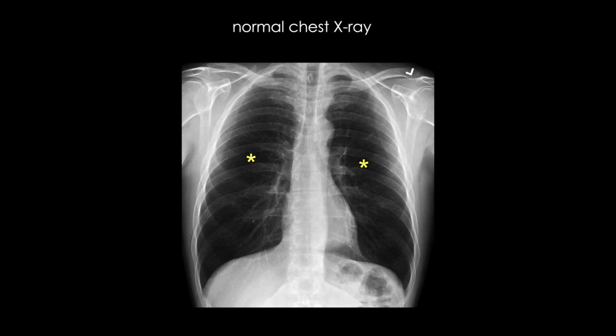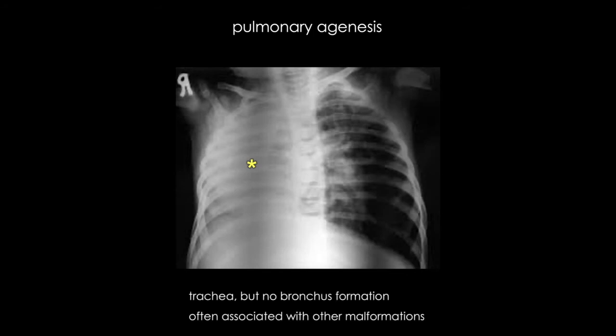In pulmonary agenesis, the bronchial tree, pulmonary parenchyma, and pulmonary vasculature don't develop. On this chest X-ray, the right lung appears white instead of black compared to the left. We have formation of the gut tube and the respiratory diverticulum — that primordium of the lung — but the bronchial bud most likely failed to develop on the right side, or the primordium hasn't formed at all. This is a very early developmental arrest. Lung agenesis can be an isolated finding, but in many cases it's associated with other congenital malformations, including those in the urogenital, vertebral, cardiac, and gastrointestinal systems.